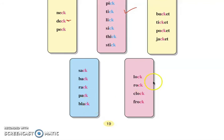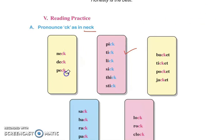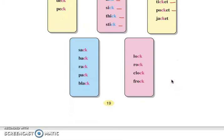More CK words: black (kala), lock (tala), rock (pathar), clock (ghadi), frock (jidhi kudhiyaan paandi haan). Now let's read them all again: neck, deck, peck, pick, tick, lick, sick, thick, stick, bucket, ticket, pocket, jacket, sack, back, rack, pack, black, lock, rock, clock, frock.